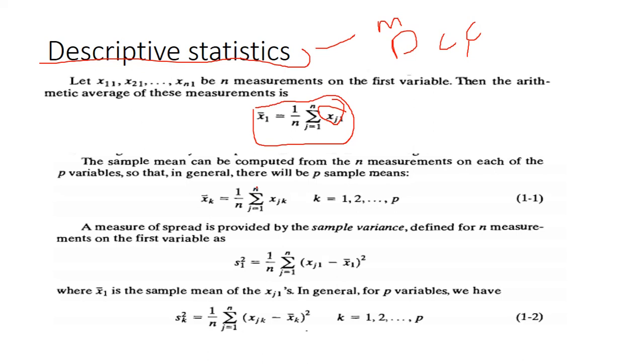The sample mean can be computed from the n measurements on each of the p variables. So in general case, there will be p sample means. This is the general formula for p samples. Just understand the logic, it is easy to understand.